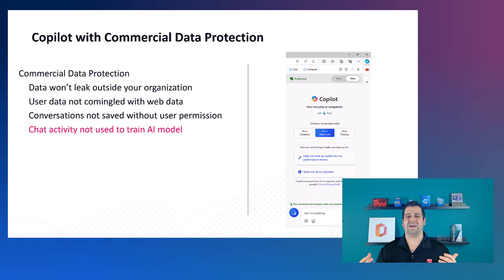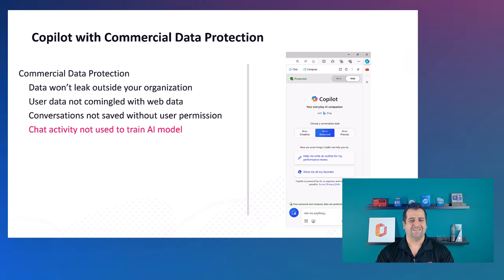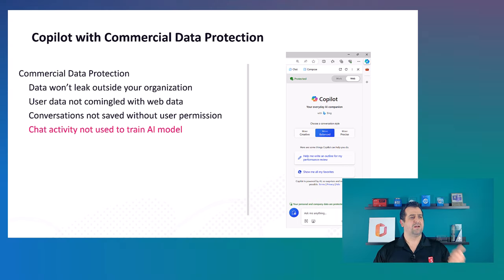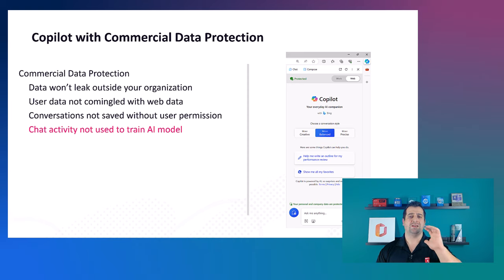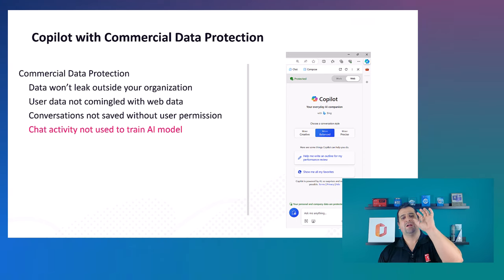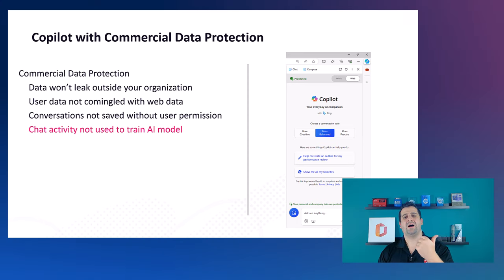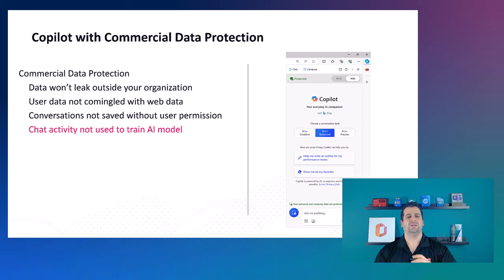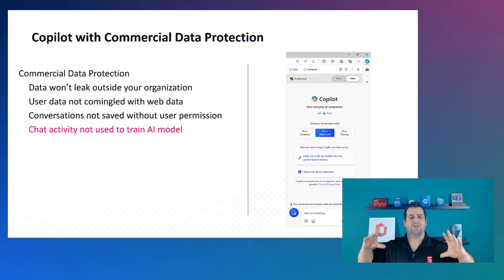We do not want that with our company data. If you work on a recipe or a travel itinerary, it doesn't matter. But you don't want your employees to put sensitive company data — which is your most precious asset, your IP — into a consumer tool and use that data to train the AI model for everyone. This is where Copilot with commercial data protection comes in. It will not save any of the data; it will remain within your organization, will not be shared on the web, conversations will not be saved, and the info will not be used to train the AI model.